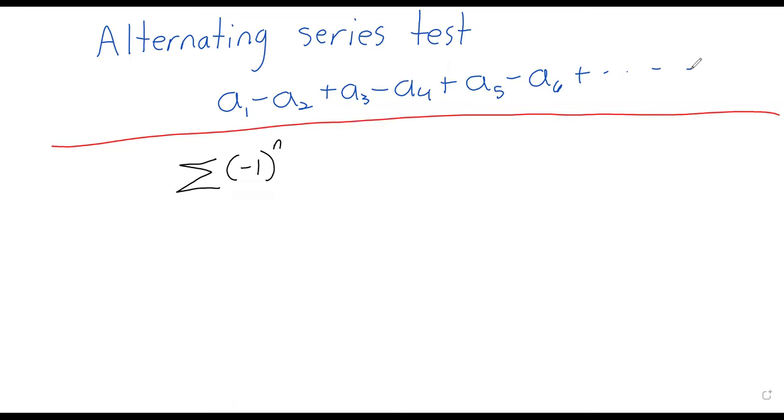The easiest way to make something alternate is to put a negative 1 to the n there. If you want it to start with a positive number, or you want it to start with a negative number, obviously, depending where the series starts.